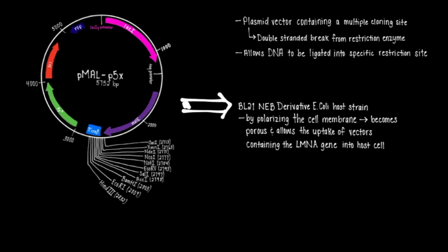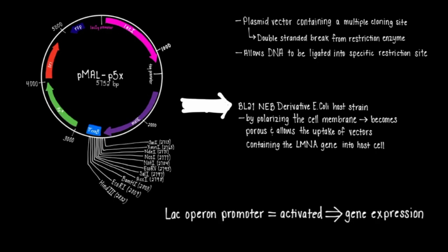The p5x vector is then transformed into the BL21 NEB derivative E. coli host strain by polarizing the cell membrane, causing it to become porous and allow the uptake of the exogenous vectors containing the LMNA gene into the host cells. The lac operon promoter is then activated by addition of allolactose to remove the lac repressor and begin expression of the protein during the beginning of the log growth phase.